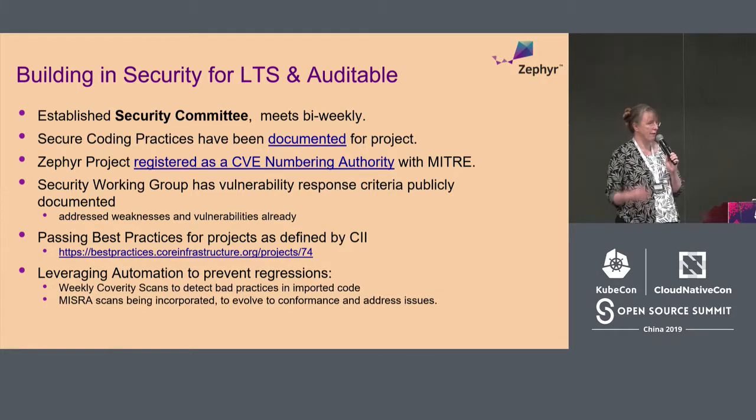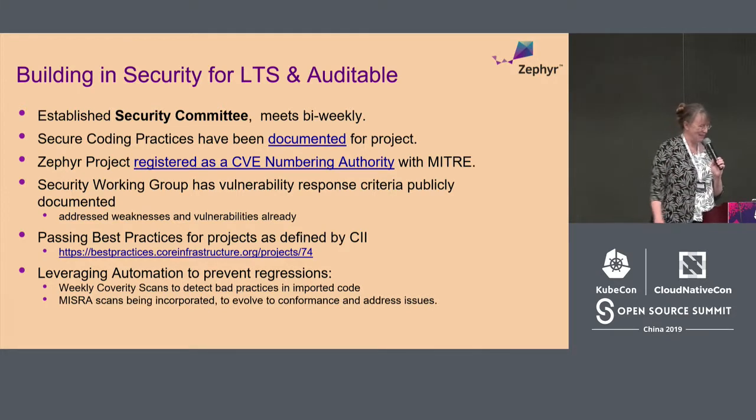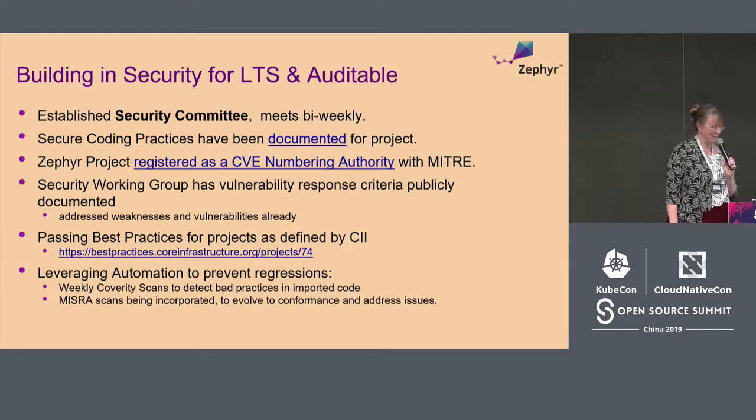There's a best practices badge available for open source projects, and Zephyr is one of the first three to achieve gold level. We finally got gold in February of this year. We have Coverity scans running on behalf of the project, the same way the Linux kernel does, and we're also working on incorporating MISRA scans. When we set out the project, we started looking at what standards we wanted to adhere to — MISRA for coding standards and quality, and IEC 61508 is where most of our members agreed they wanted to work.